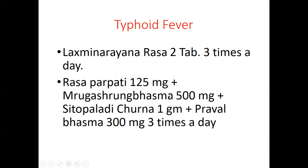Alternatively, you can use this second prescription: Lakshminarayan Ras, two tablets three times a day, plus a powder combination of Rasa Parpati 125 mg, plus Vrusha Shringa Bhasma 500 mg, plus Sitopaladi Churna 1 g, plus Pravala Bhasma 300 mg — this whole combination of powders three times a day.